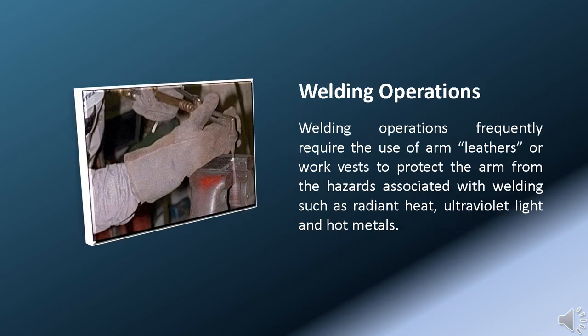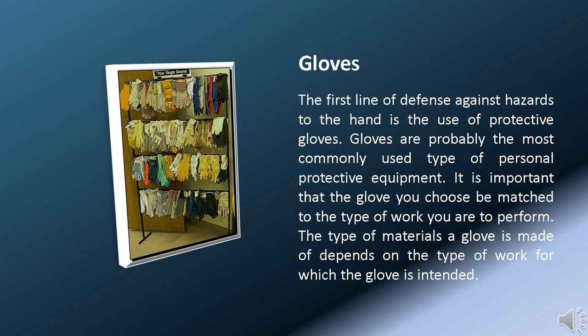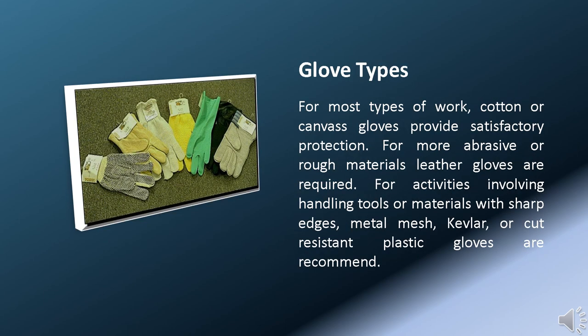Welding operations frequently require the use of arm leathers or work vests to protect the arm from radiant heat, ultraviolet light, and hot metals. The first line of defense against hazards to the hand is the use of protective gloves. Gloves are probably the most commonly used type of personal protective equipment. It is important that the glove you choose be matched to the type of work you are to perform. The type of material a glove is made of depends on the type of work for which it is intended. For most types of work, cotton or canvas gloves provide satisfactory protection. For more abrasive or rough materials, leather gloves are required.